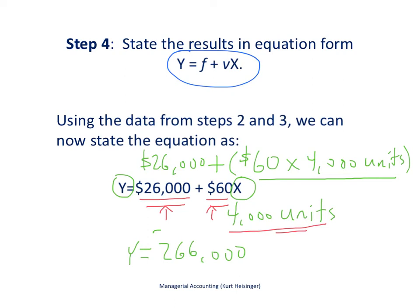And we said, well, what if we produce 4,000 units? Let's plug that in and see what the result is. We did that. We took 4,000 units and multiplied it by $60 per unit, added our total fixed cost, and came up with an estimate in the future of $266,000 in production costs if we produce 4,000 units.